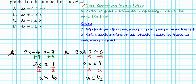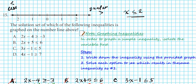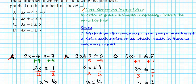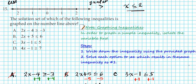Proceeding to option C: 3x minus 1 is less than or equal to 5. Add 1 to both sides: 3x less than or equal to 6. Divide both sides by 3: x less than or equal to 2. That matches our desired inequality. So option C is the correct answer for number 15.